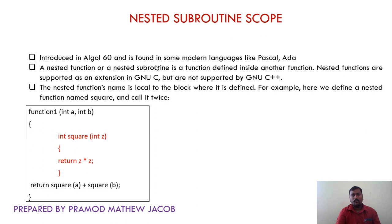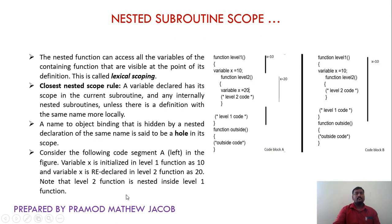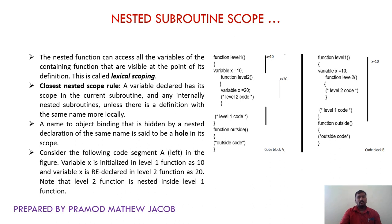The nested function's name is local to the block where it is defined. In this example, we define a nested function called square and call it twice — square(a) + square(b). Regarding the scope rule in nested sub-routines: the nested function can access all the variables of the containing function that are visible at the point of its definition. This is called lexical scoping. A variable declared has its scope in the current sub-routine and any internally nested sub-routines, unless there is a definition with the same name that is more local.